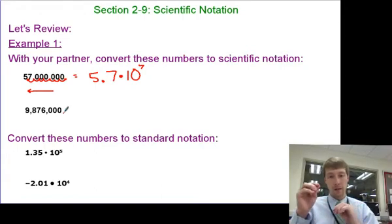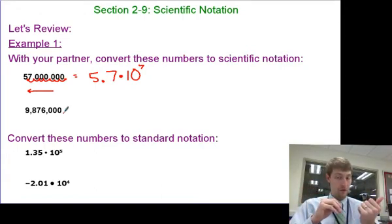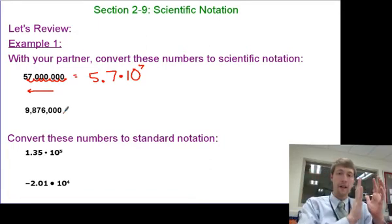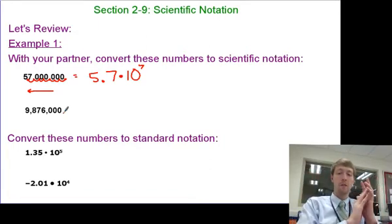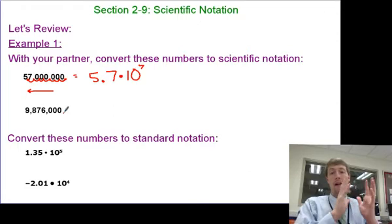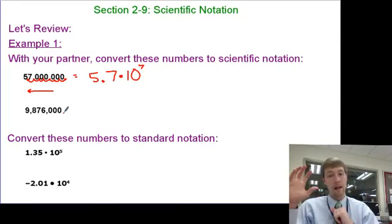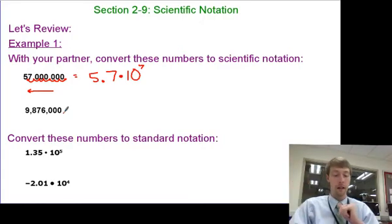Notice I'm moving the decimal to the left, so I'm taking this big number and crunching it down, which means I've got to multiply. My power of 10 has to be a really big number. So if I start with a really big number, my power of 10 has to be a really big number. Keep that in mind for later.